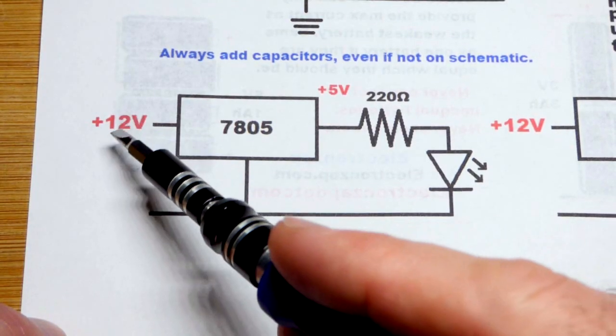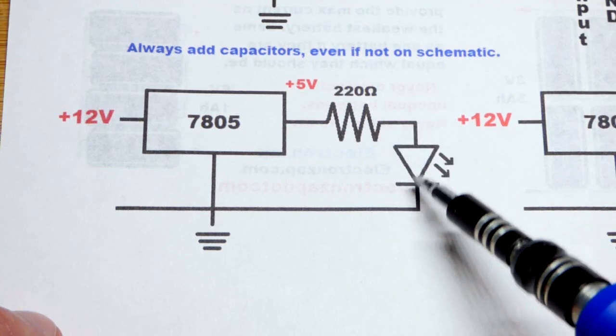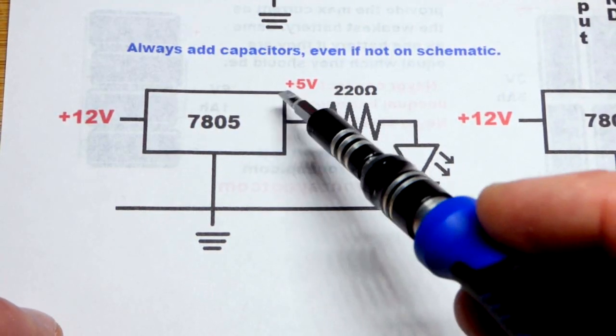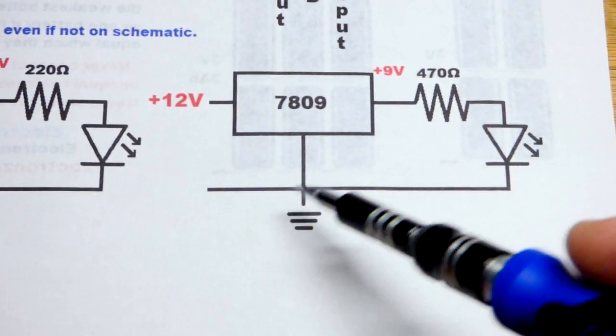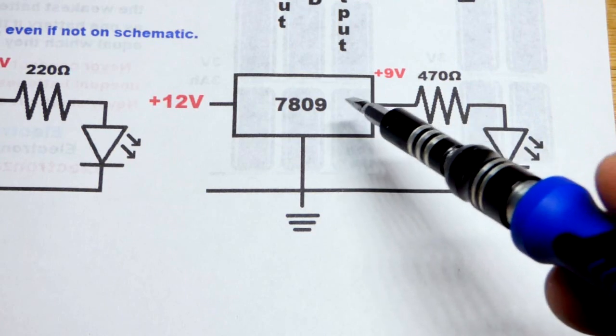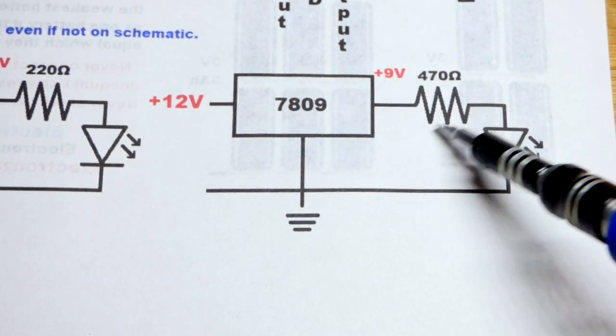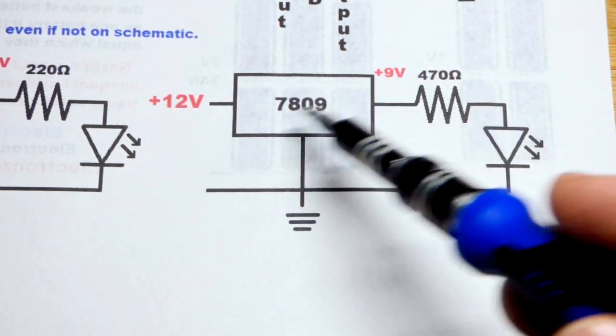And so when we get to the board we'll be powering it with 12 volts from the supply. But the 220 ohm resistor and LED will have the 7805 protecting them so we'll have 5 volts out there. We'll look at that with the multimeter. And then the 470 ohm with the LED will be protected by the 7809 so that we will have 9 volts out there. And we need at least 11 volts to power this one.